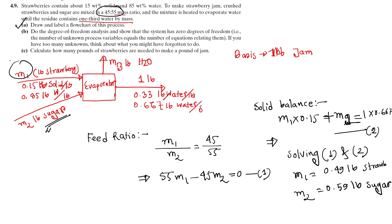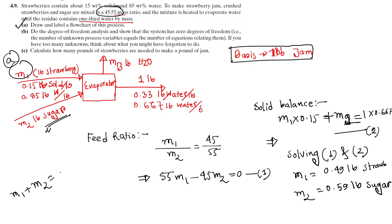Draw the flowchart of this process and do the degree of freedom analysis. The number of unknowns is M1, M2, and M3. From the overall balance: M1 plus M2 equals 1 plus M3, so we can find M3 from that equation.